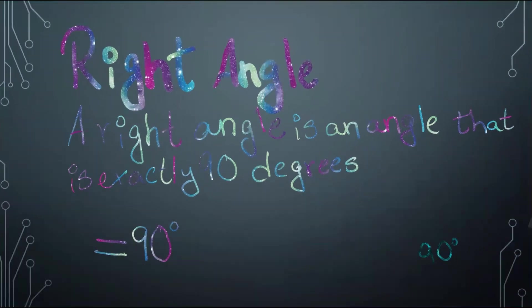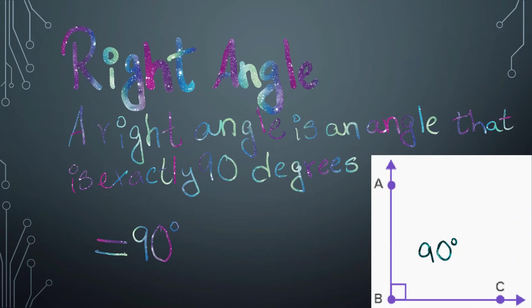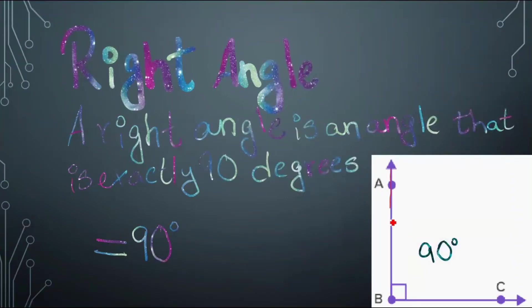Right Angle. A right angle is an angle that is exactly 90 degrees. This angle is equal to exactly 90 degrees. We can understand that it is a right angle if it is exactly 90 degrees — instead of making a circle, it will make a square.